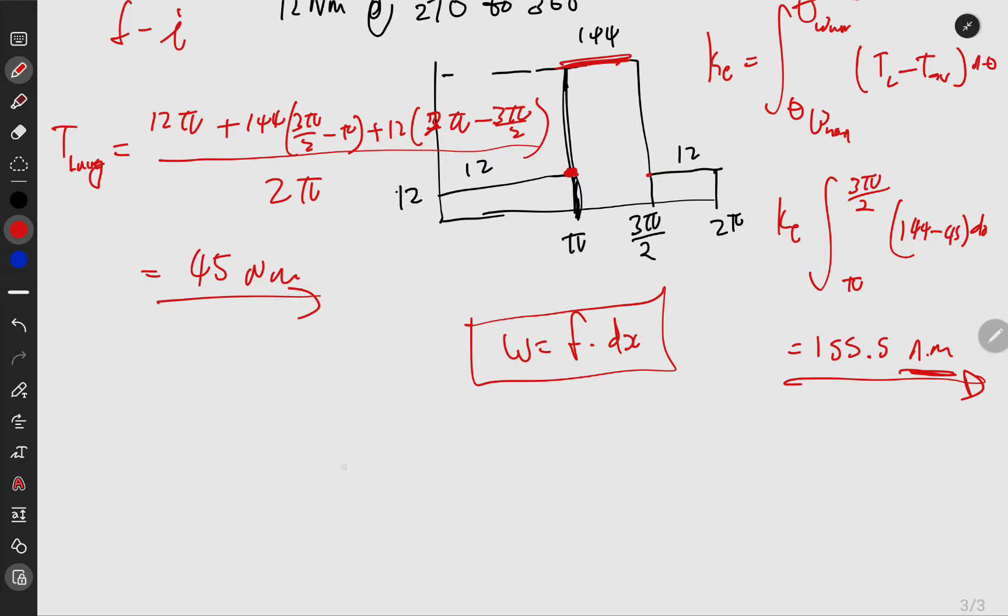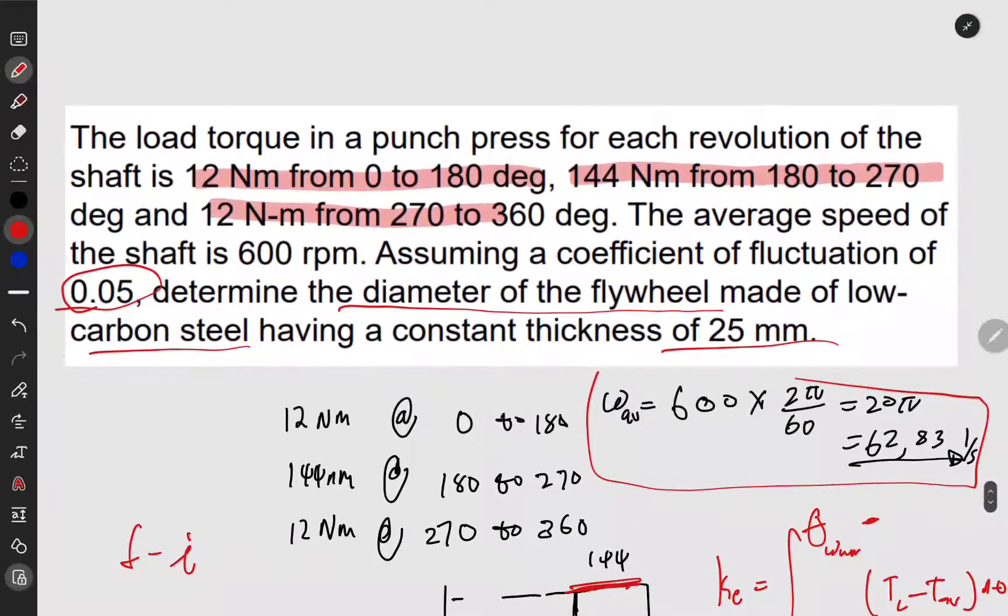I got my average, and they gave me the fluctuation factor. Our next goal when we need dimensions is getting inertia. There's a formula: kinetic energy over cf equals inertia times omega average squared. We have all the parameters.